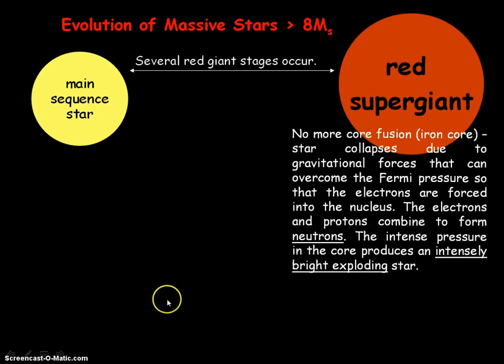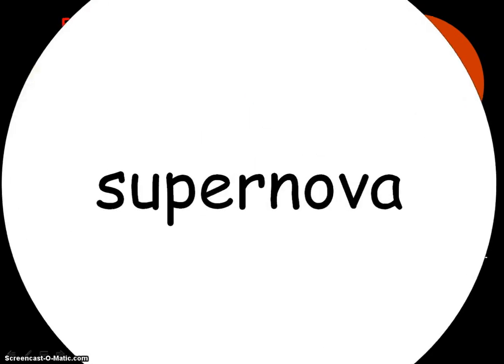When fusion stops, the star collapses due to gravitational forces, which are large enough to overcome the Fermi pressure of the electrons. The electrons are forced into the nucleus, where electrons and protons combine to form neutrons. The intense pressure in the core produces an intensely bright exploding star — this is the supernova stage.